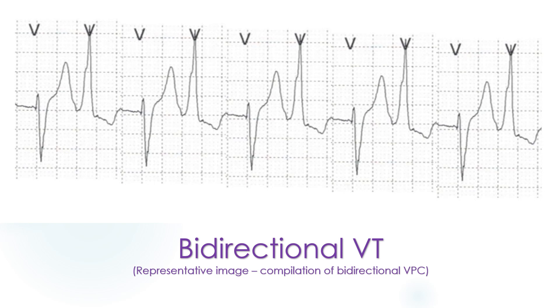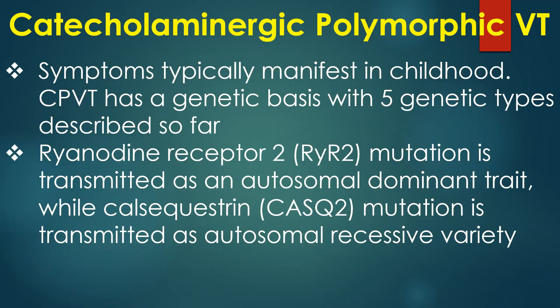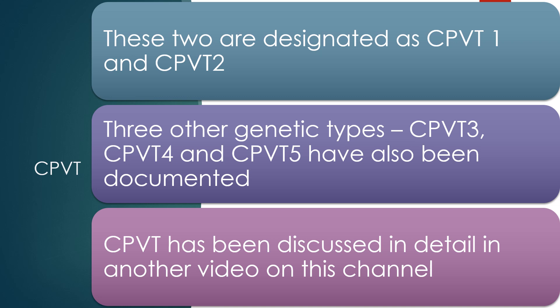Catecholaminergic polymorphic ventricular tachycardia is a bidirectional polymorphic VT which is induced by exercise or catecholamine infusion. Family history of premature sudden cardiac death and stress-related syncope is obtained in about a third of patients. Exercise or acute emotion triggers the syncope in CPVT, and symptoms typically manifest in childhood. CPVT has a genetic basis with 5 genetic types described. Ryanodine receptor 2 mutation is transmitted as an autosomal dominant trait, while calsequestrin mutation is transmitted as an autosomal recessive variety; these are designated CPVT1 and CPVT2. Three other genetic types — CPVT3, CPVT4, and CPVT5 — have also been documented. CPVT has been discussed in detail in another video on this channel.